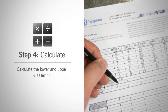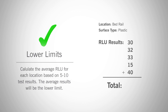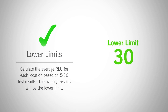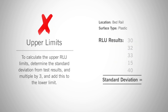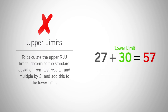Step 4: Calculate the lower and upper RLU limits. To calculate the lower RLU limit, take the average RLU for each location based on the 10 test results. The average result will be the lower RLU limit. To calculate the upper RLU limit, determine the standard deviation from the test results, multiply the standard deviation by 3, and add this to the lower limit.